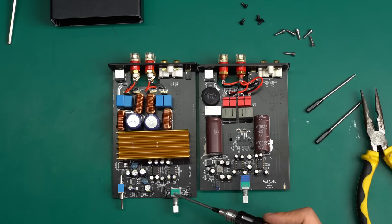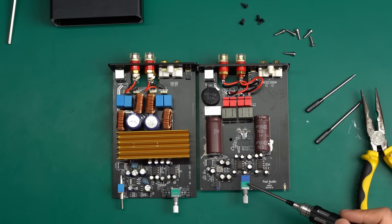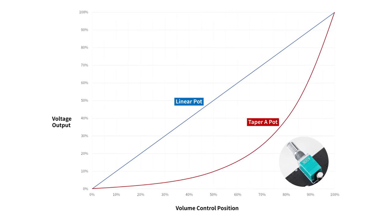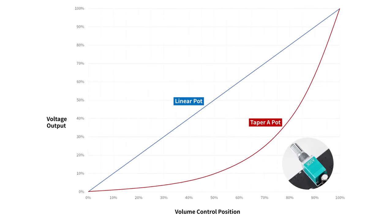The A07 uses a taper B-pot, while the V3 uses a taper A-type. This is nice, as the human ear perceives sound volume on a logarithmic curve, and the taper A-pot fits this characteristic.